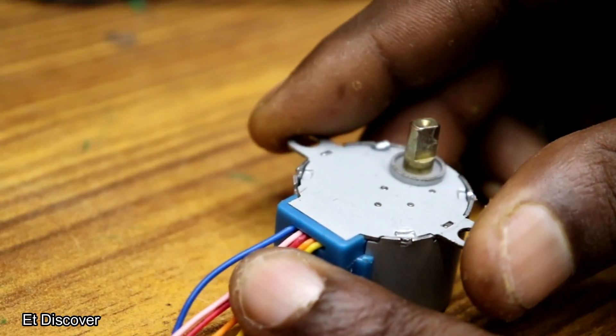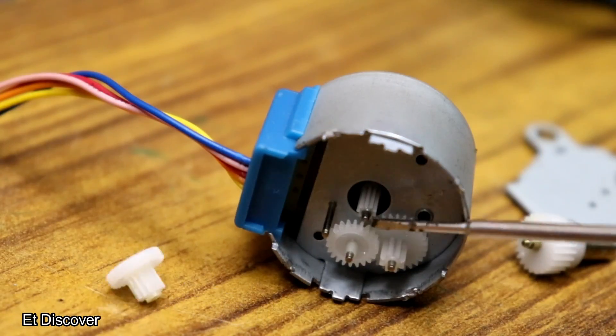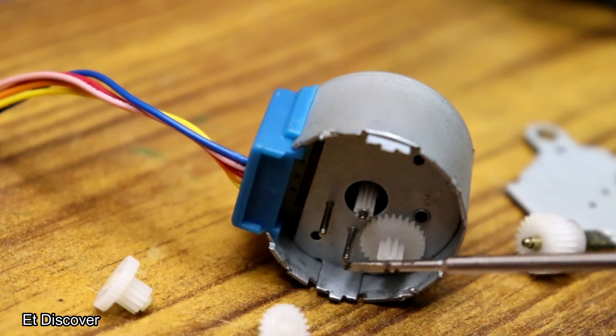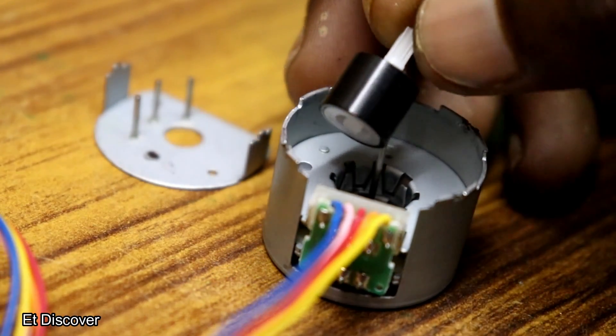This is a unipolar motor. Let's open it and you can see here are 4 gears in total. So I remove all the gears and also the gear holder plate. This is the rotor magnet which is rotating the whole gear system.